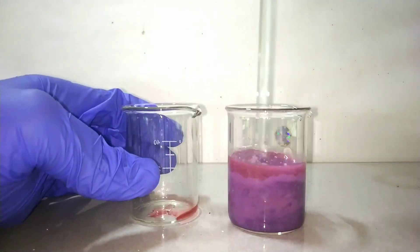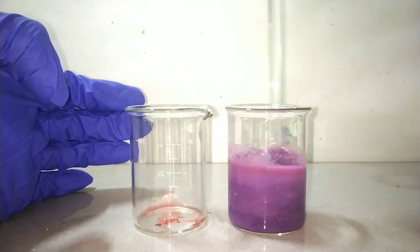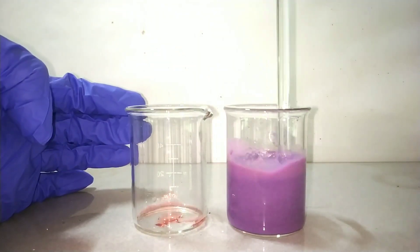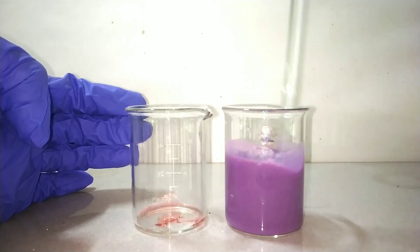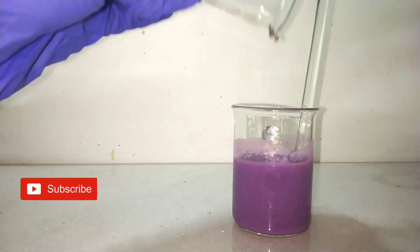What's happening here is cobalt 2 nitrate reacts with sodium carbonate to precipitate out cobalt 2 carbonate. This has a violet color. Give a nice stirring to ensure complete reaction.